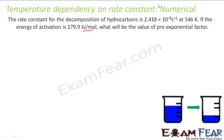The equation we know is k is equal to A e to the power minus Ea by RT. Here, t is given, R is something we know, Ea is given, A is something we have to find, and k is also given. Let's put the values.